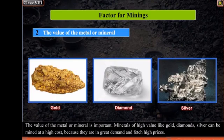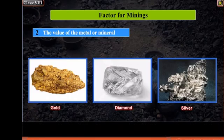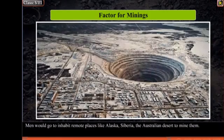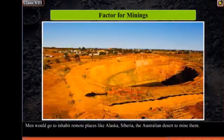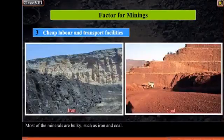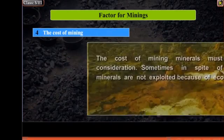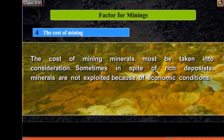The value of the metal or mineral is important. Minerals of high value like gold, diamonds, and silver can be mined at a high cost because they are in great demand and fetch high prices. Men would go to inhabit remote places like Alaska, Siberia, and the Australian desert to mine them. Most minerals are bulky, such as iron and coal, so cheap labour and transport facilities are necessary to mine them and take them to manufacturing factories. The cost of mining minerals must be taken into consideration. Sometimes, in spite of rich deposits, minerals are not exploited because of economic conditions.